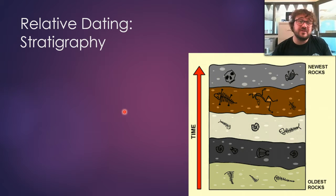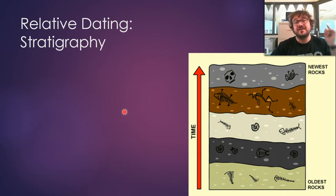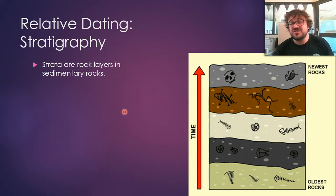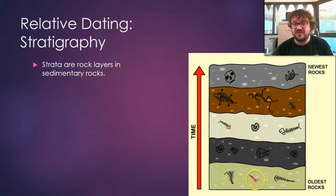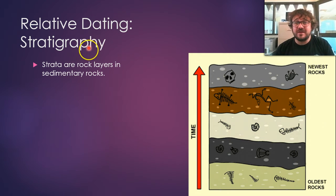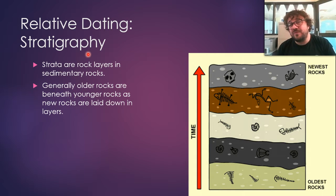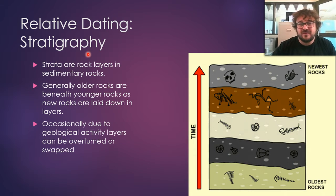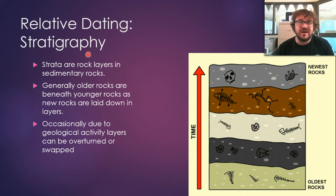So how do we do it? We do relative dating with something called stratigraphy — it's a great word. Strata are rock layers in sedimentary rocks. Graphy means you're making a picture out of it, so building a picture out of the different strata. Older rocks are beneath younger rocks. Except sometimes it's not, which means we can't just go for one site — we need to compare it.